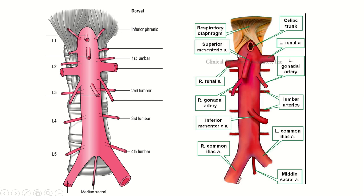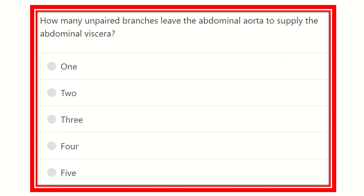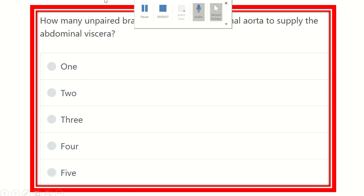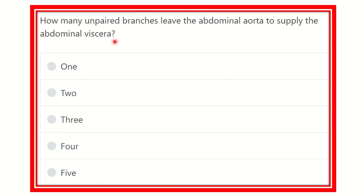Hello everyone, welcome to another question and answer session. Here is our question: how many unpaired branches leave the abdominal aorta to supply the abdominal viscera?